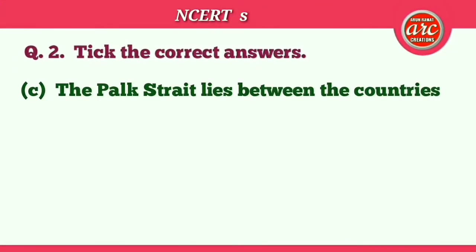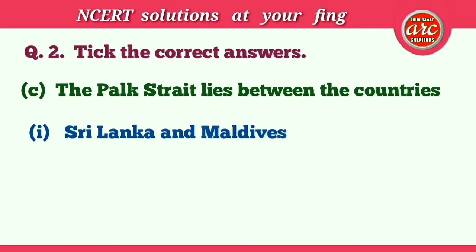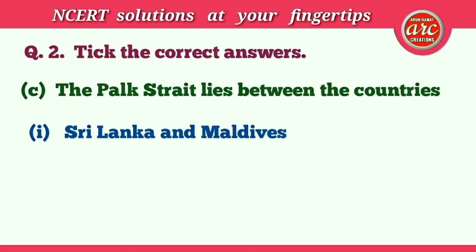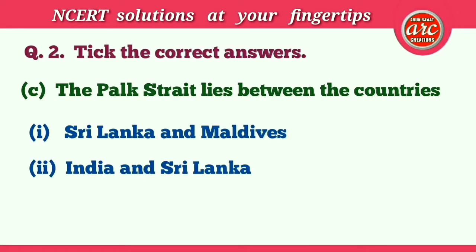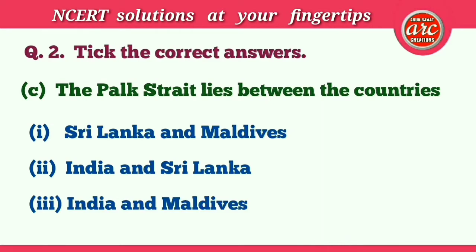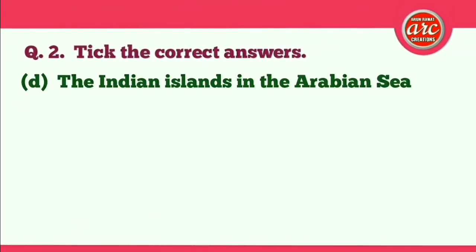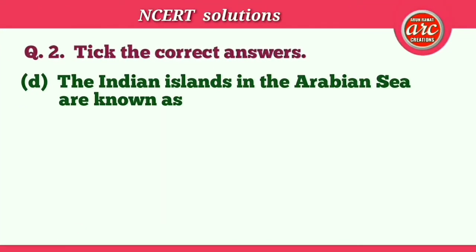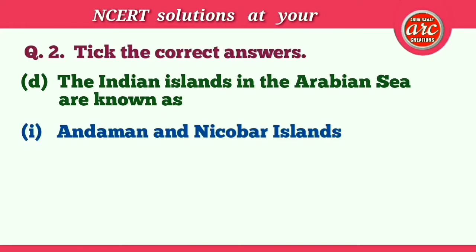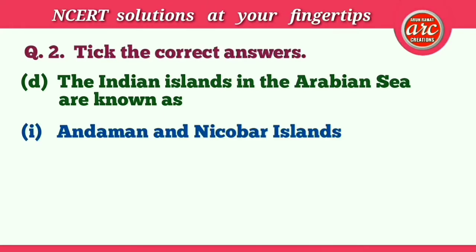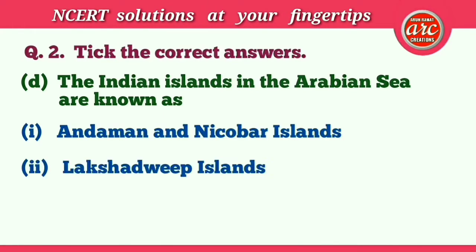(c) The Palk Strait lies between the countries: (1) Sri Lanka and Maldives, (2) India and Sri Lanka, (3) India and Maldives. The correct answer is number two — India and Sri Lanka. (d) The Indian islands in the Arabian Sea are known as: (1) Andaman and Nicobar Islands, (2) Lakshadweep Islands, (3) Maldives.